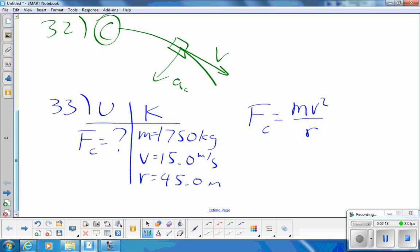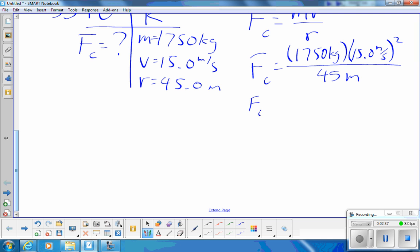M V squared over R. I'm going to put in the numbers. 1750 kilograms times 15.0 meters per second. Just the 15 meters per second gets squared. All divided by 45 meters. And that gives me a centripetal force of, when I do all the math, 8750 newtons, which is exactly choice C. Let's see how easy that was.